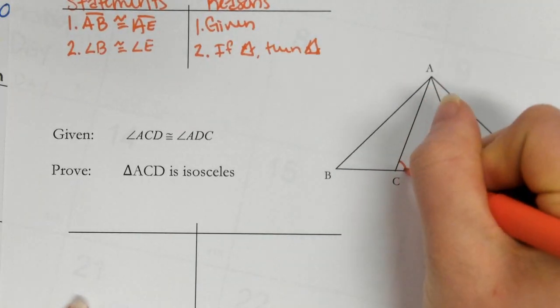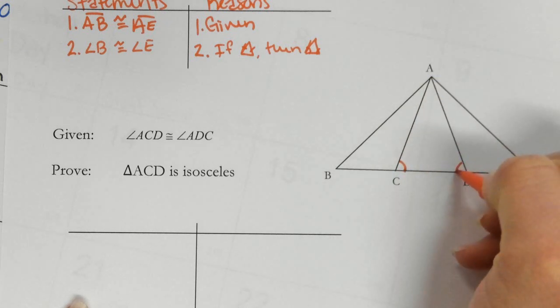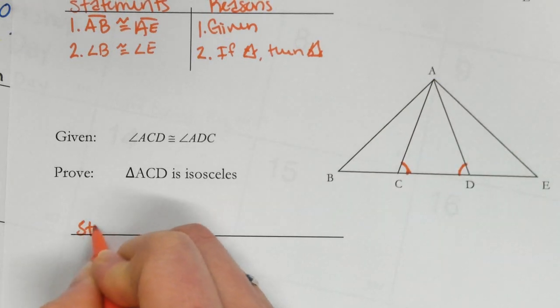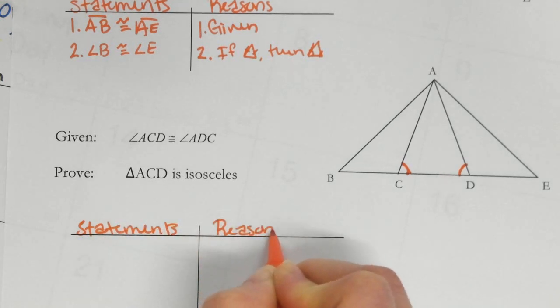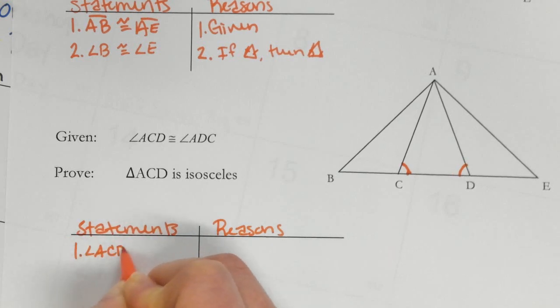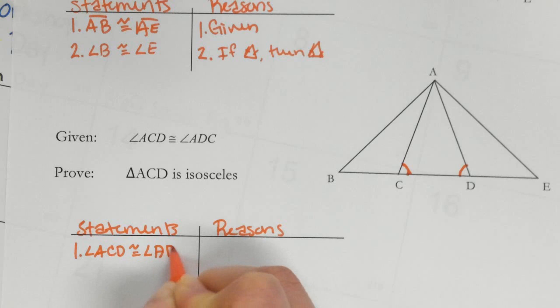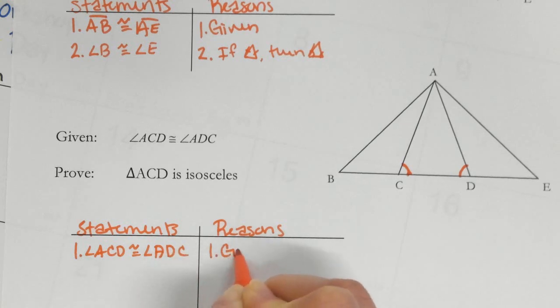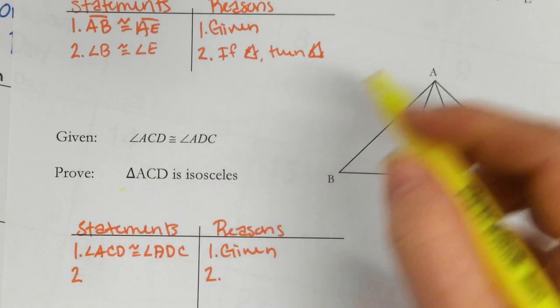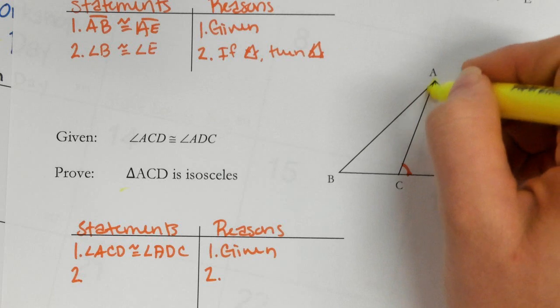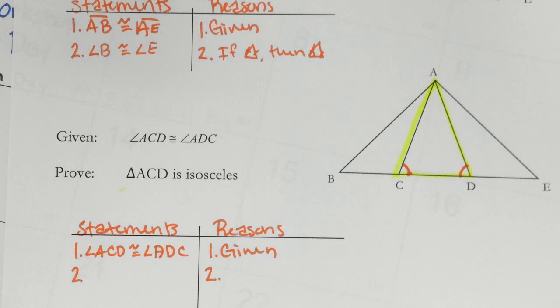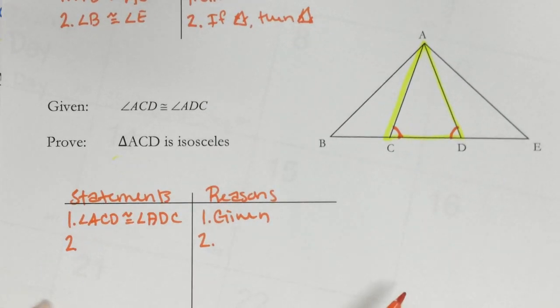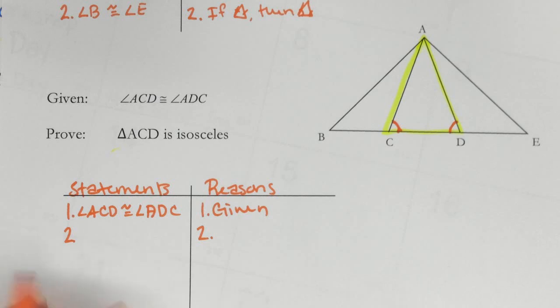ACD is this angle. ADC is this angle. So there's my given. And remember, it says ACD is isosceles. So ACD. So that is my triangle. I want to prove that is isosceles. Remember, isosceles means it has two congruent sides.